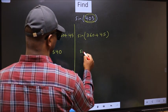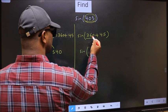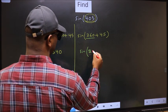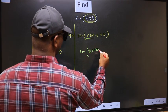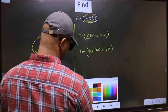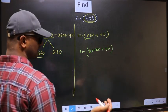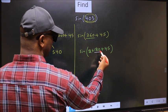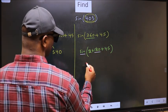Sin. In place of 360, now you write 2 times 180 plus 45. Here we have 180, so sin is not going to change.